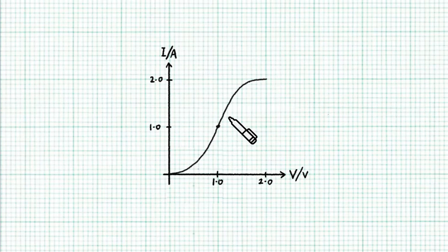Next question. So from this IV characteristic graph, can you tell when this component has the smallest resistance?